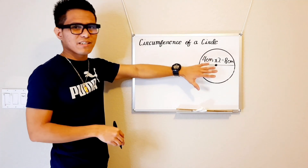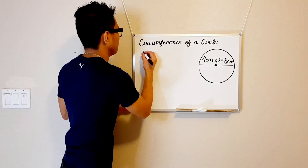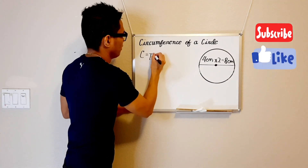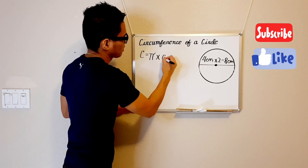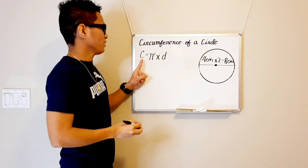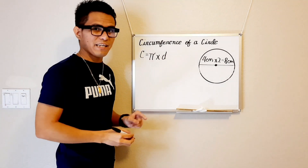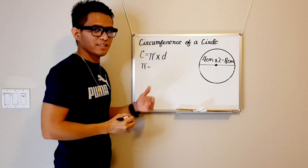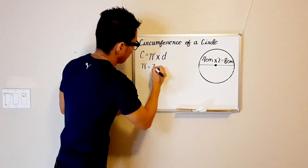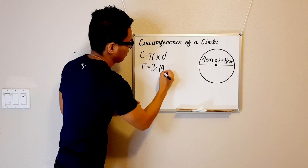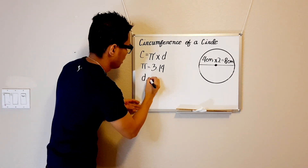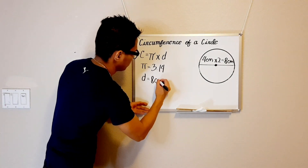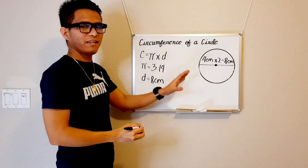So to find the circumference of this circle, we're gonna use this formula. C equals pi times D. C is for circumference, this is our pi, and D is for diameter. So the value of our pi is still 3.14, and our diameter is 8 cm.